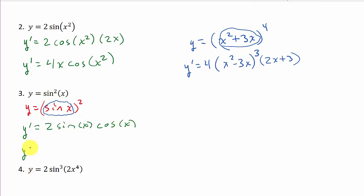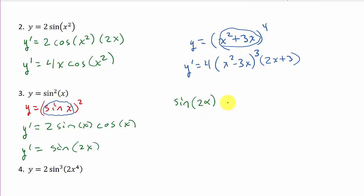And so this would give us y prime is equal to sine 2x. You might wonder where that's coming from — that's the double angle identity for sine. If you go back to your trig and look up the double angle identity for sine, you'll see that sine of 2α equals 2 sine α cosine α. So that's all I did — I just went from 2 sine x cosine x to sine 2x.